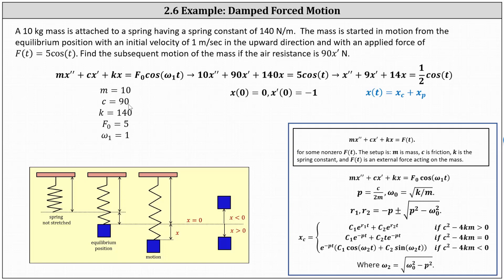This gives us the differential equation: 10x'' + 90x' + 140x = 5 cos t. Of course, we could divide through by 10 and write the differential equation in the simplified form shown here on the right.